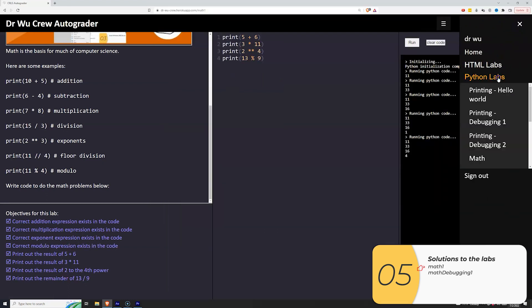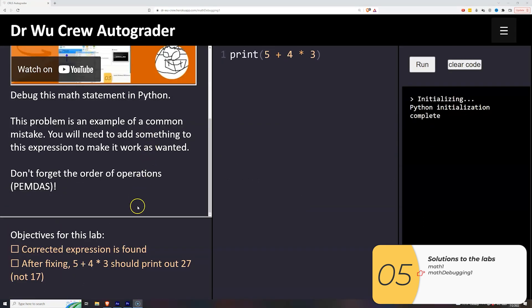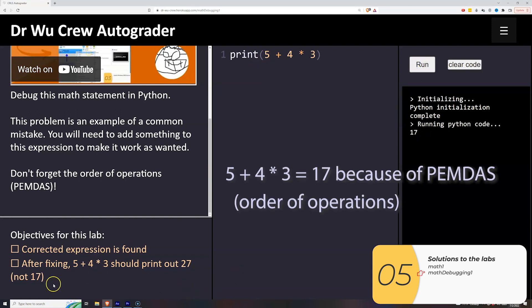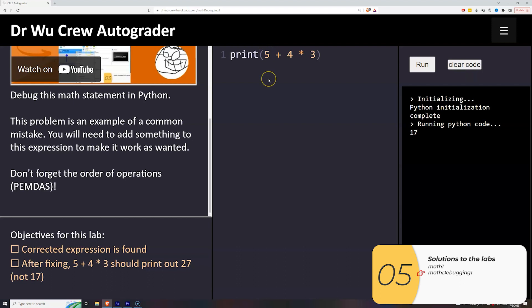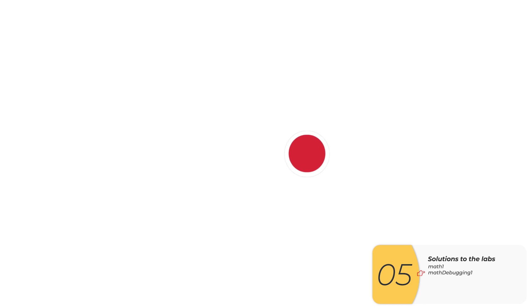All right, so now I'll try the next one, which is math debugging. In this one, we have 5 plus 4 times 3. And what does that equal? Well, when I click the run, it equals 17. But I don't want it to equal that. I want it to equal 27. So what do I have to do to make it work? This is a classic PEMDAS error. Just by itself, it will do 4 times 3 first, and that's not what I want. So I'll put parentheses around the 5 plus 4, which will make it do the 5 plus 4 first. And then 5 plus 4 times 3 is 27. And then, so when I run it, then it works.